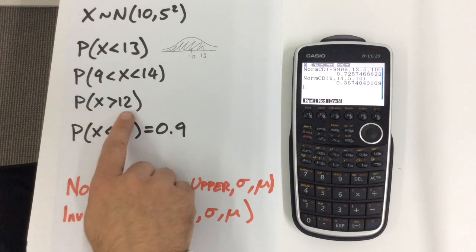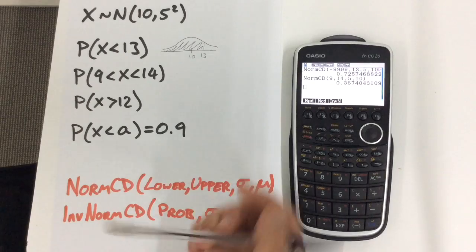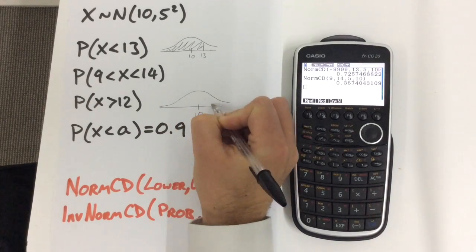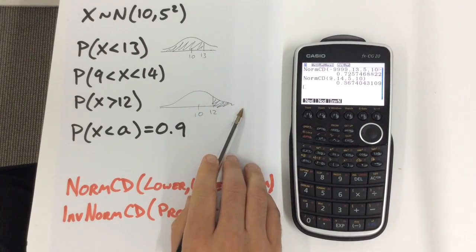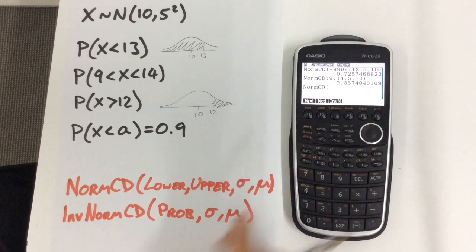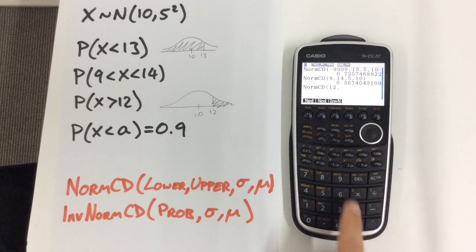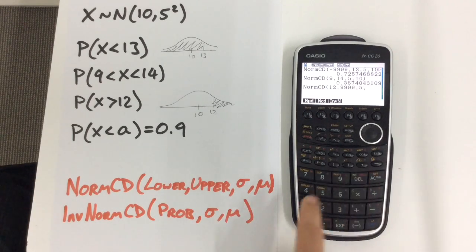For a question such as this, it's the same as this one except we now don't have an upper bound. Our little diagram would be that we're going from 12 upwards to positive infinity. So again when we do that calculation, we go from 12 up to some very large number, putting in the values 5 and 10, and there's our value. So we've worked that out nice and easily.